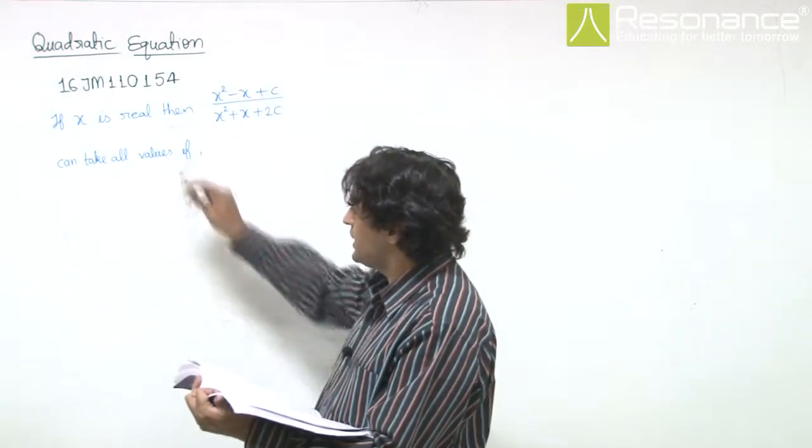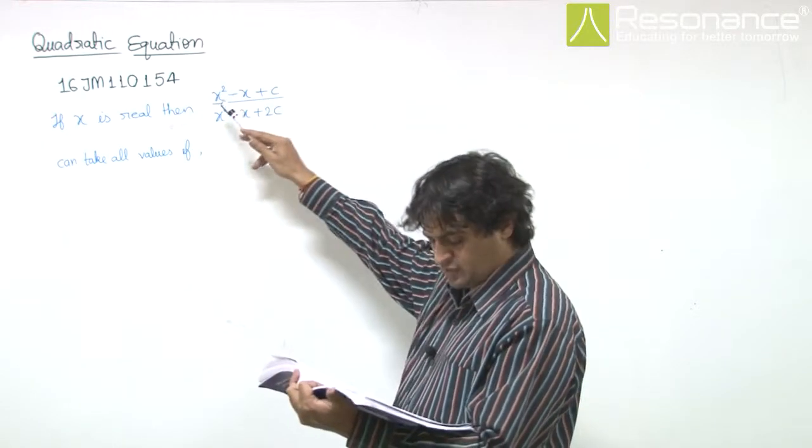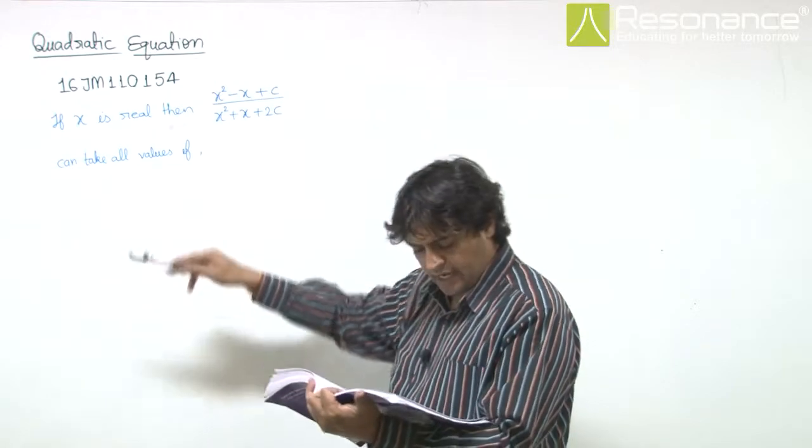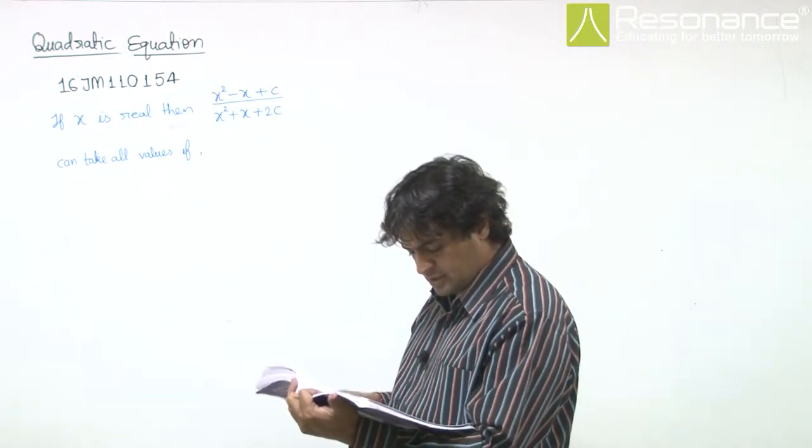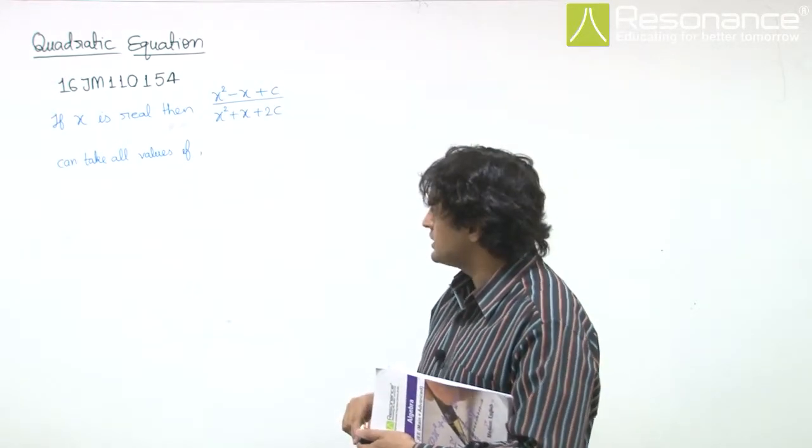In this question, we are given that if x is real, then this expression x square minus x plus c upon x square plus x plus 2c can take all values. We need to find for which values of c this expression can take all real values.